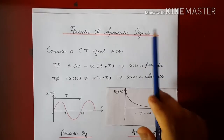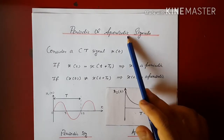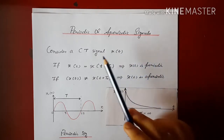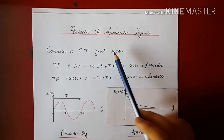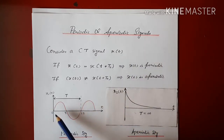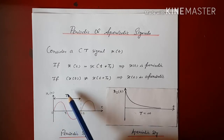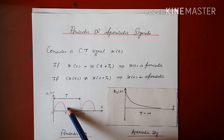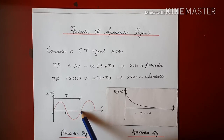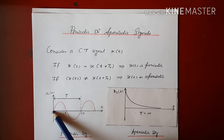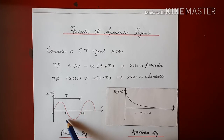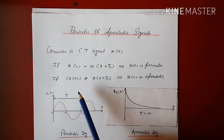In today's tutorial we are going to learn about periodic and aperiodic signals. For a continuous time signal x, as shown here in the sinusoidal wave, if the signal repeats itself after a particular time — in this case the sinusoid repeats itself at t equal to 2π — after t equal to 2π we can see a similar peak as at t equal to zero. Thus a periodic signal repeats itself; the part of a signal repeats itself after a time period called the period.